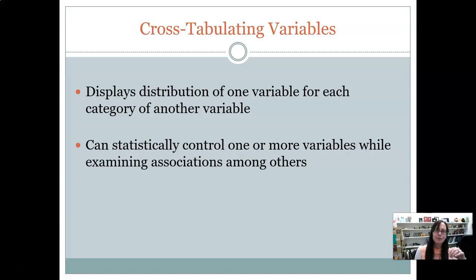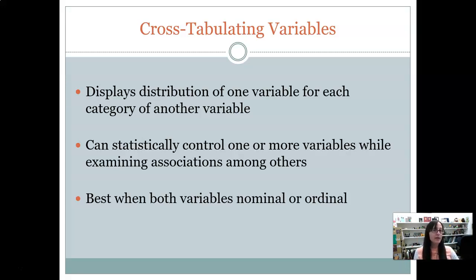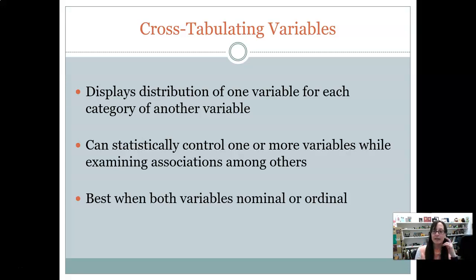This is best to use when variables are nominal or ordinal. It doesn't really work for interval or ratio level variables because you need the categories to put them in a table. So this is one type of bivariate measure where we are looking at two variables that are either nominal or ordinal — discrete level variables — and we are plotting them in a table to see how the two variables are related.